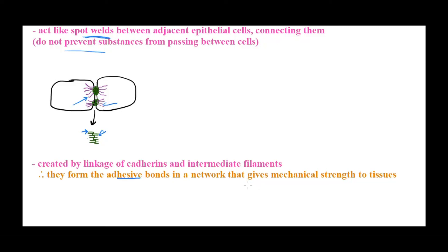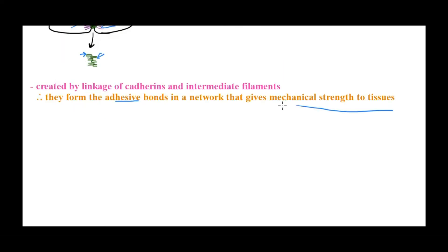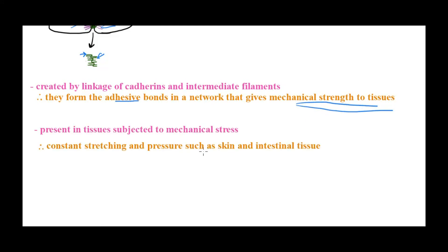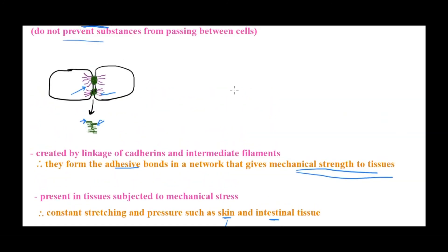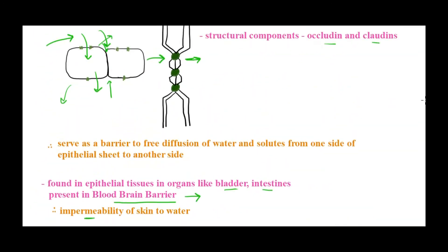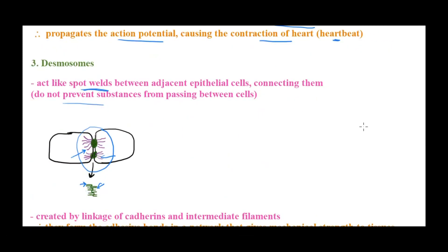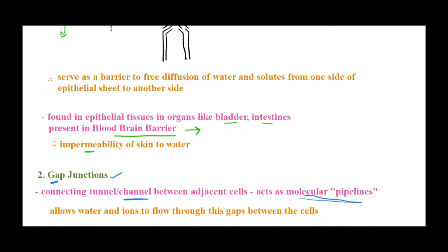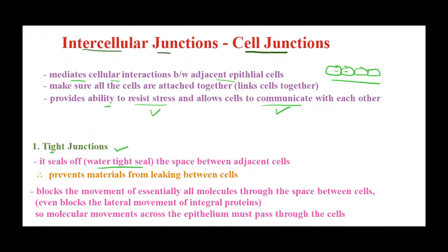The cadherin molecules are linked to the intermediate filaments inside the cell. This means desmosomes form very strong adhesive bonds between two epithelial cells. They give mechanical strength to tissue. Because they provide mechanical strength, they are present in tissues exposed to stretching or pressure, like skin cells and intestinal tissues. If you stretch your skin, the cells do not fall apart — that is because of the desmosomes. In skin cells, both tight junctions and desmosomes can be present simultaneously, showing that a single cell can have more than one type of intercellular junction.